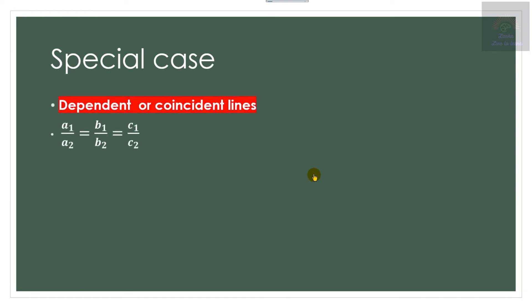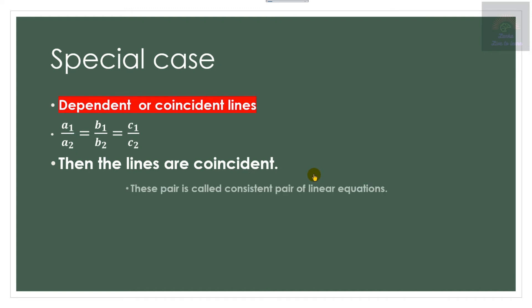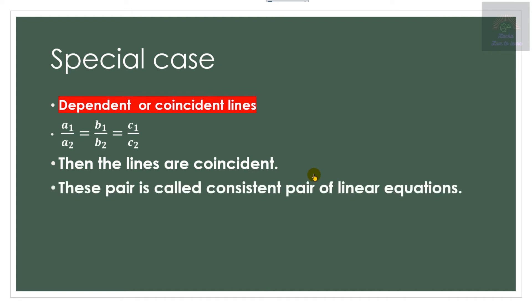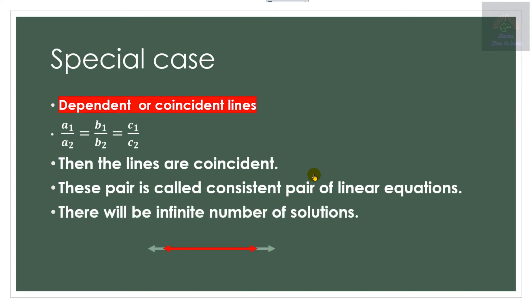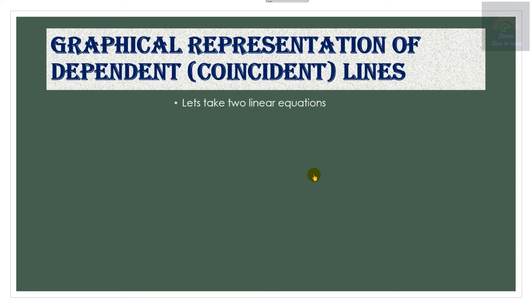Now let us recall the special case already discussed in the previous video: dependent or coincident lines. If you take the ratios of the two linear equations — that is a1/a2, b1/b2, and c1/c2 — they are all equal. When these three ratios are equal, the lines are coincident, meaning they overlap each other, and there will be an infinite number of solutions.